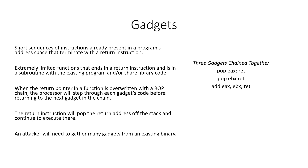Gadgets are short sequences of instructions already present in a program's address space that terminate with a return instruction. Each gadget typically has an extremely limited function that ends in a return instruction and is found in a subroutine within the existing program and/or shared library code. When the return pointer of a function is overwritten with a ROP chain,